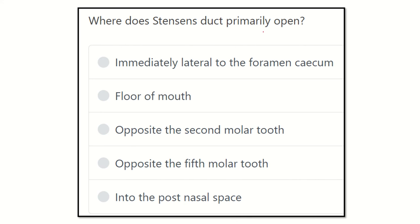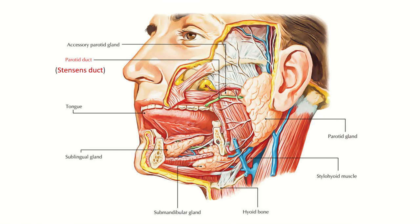So now we have to find out the Stensen's duct and where it opens. Here we can see it is the head, neck and face area. In this area, we can see this is a gland — this gland is the parotid gland — and here is another gland, the submandibular gland, and another gland, the sublingual gland. They are the salivary glands which lie around the face. We can see the different ducts arise from the glands and they finally end into the oral cavity.